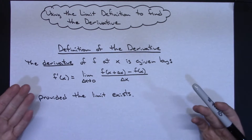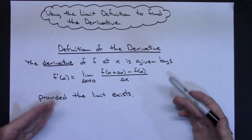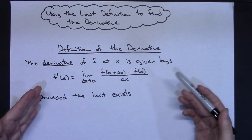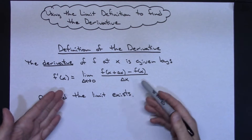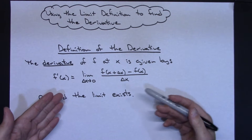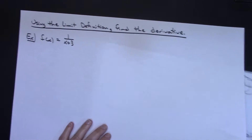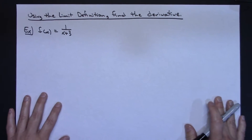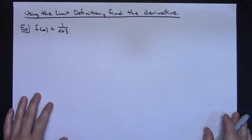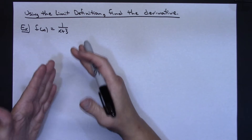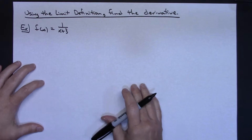It does make finding the derivative a longer process. But many calculus professors at college want you to be able to do at least one or two derivatives showing all of the algebra that goes behind this. So the directions are very explicit: using the limit definition, find the derivative. You've got to show all that algebra involved in order to get credit.